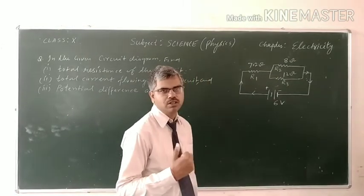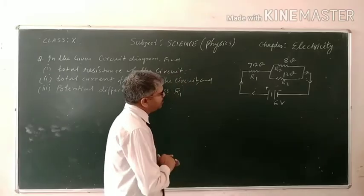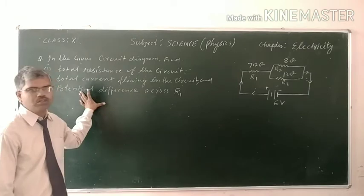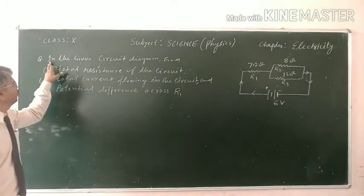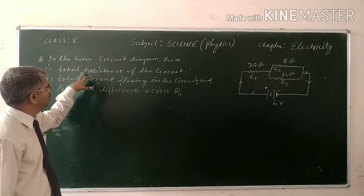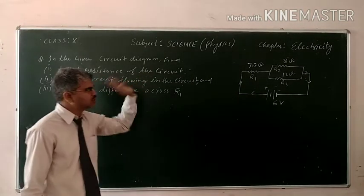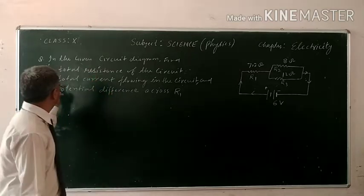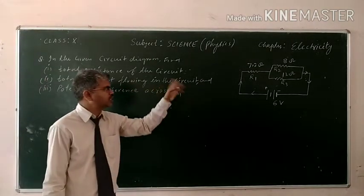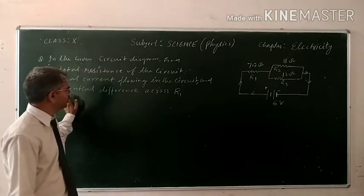Students, we have a question for you. In the given circuit diagram, find first total resistance of the circuit, second part total current flowing in the circuit, and the third potential difference across R1.